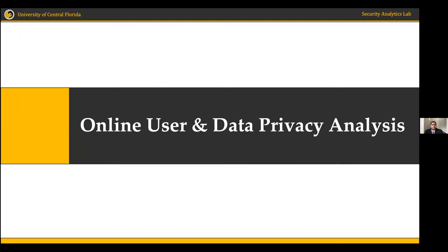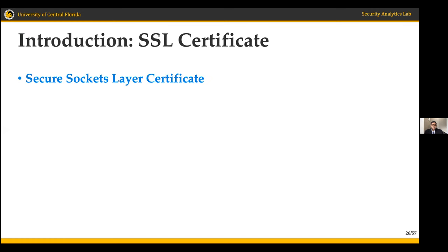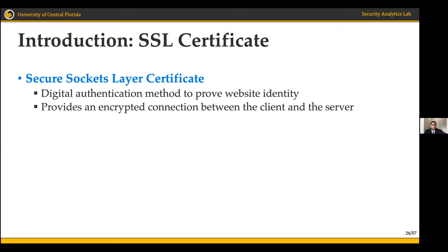Now we move to the second thrust of this dissertation: online user and data privacy analysis. This thrust focuses on the analysis of SSL certificates of free content websites and studies how they differ from premium websites. We explore the fundamental and structural differences between free and premium content websites, focusing on SSL certificate content and information. Having a valid certificate enables secure connections between the client and the server. Obtaining website certificates provides information including the domain name, certificate authority, its validity, and the certificate signature algorithms.